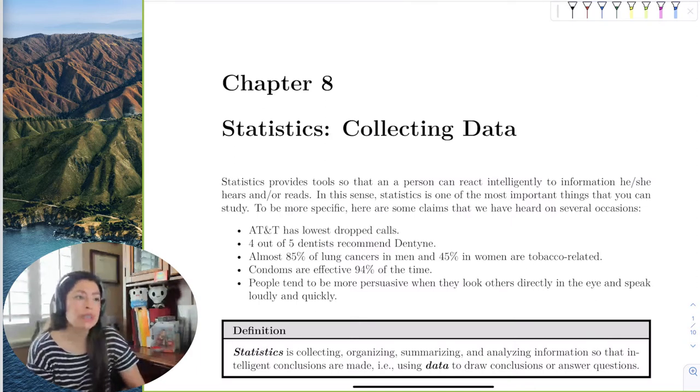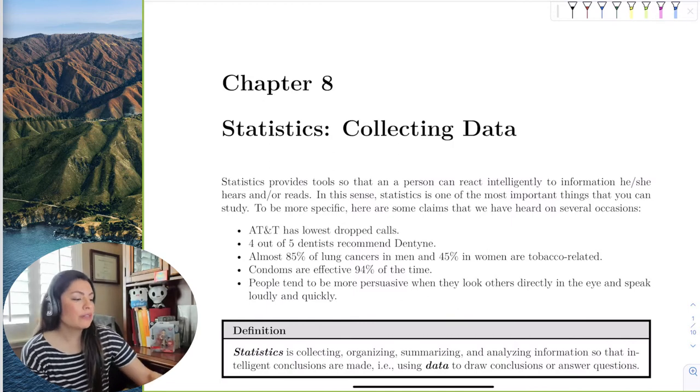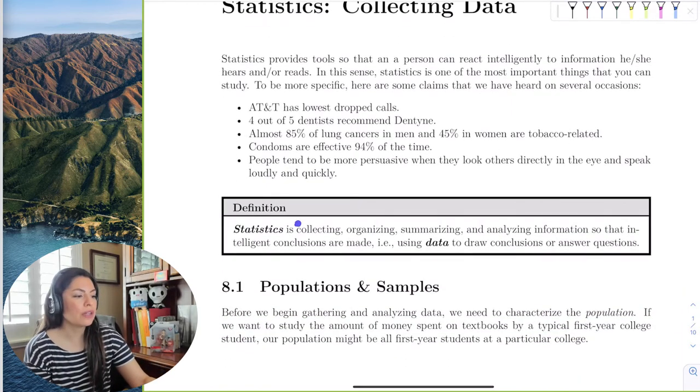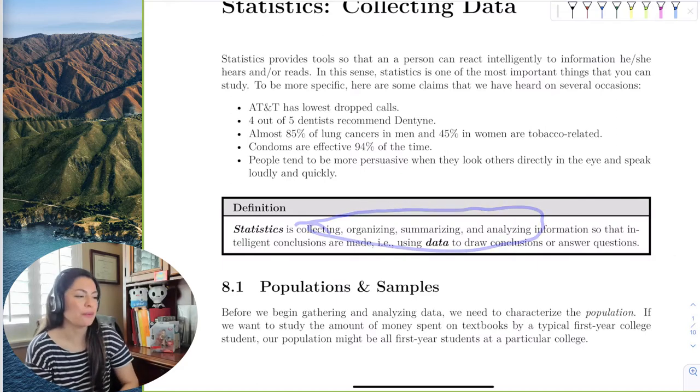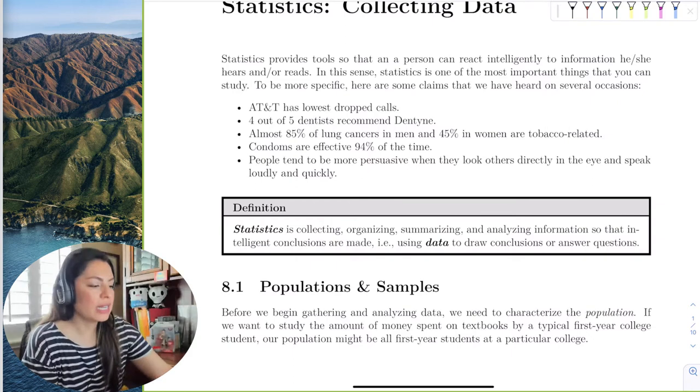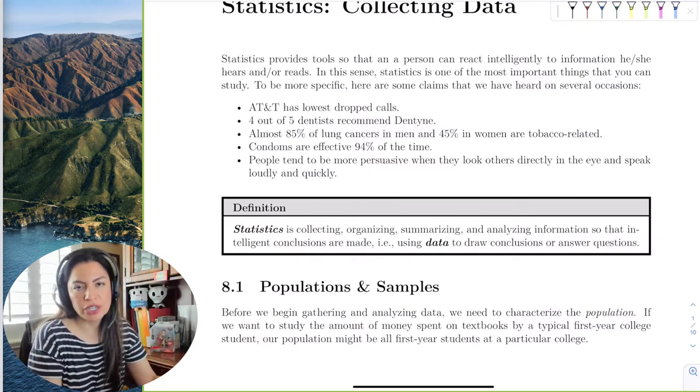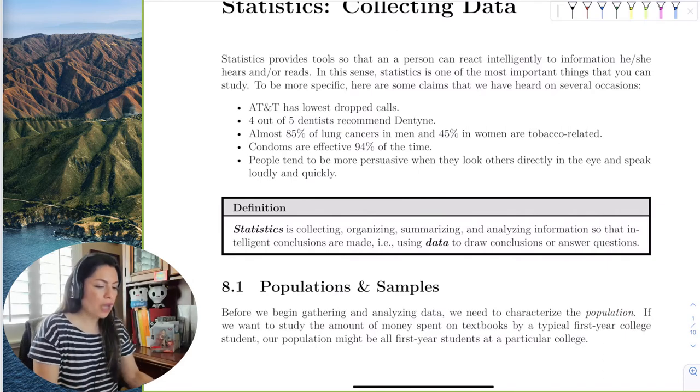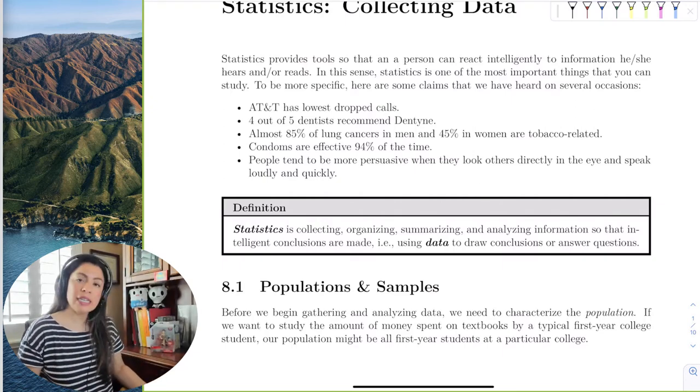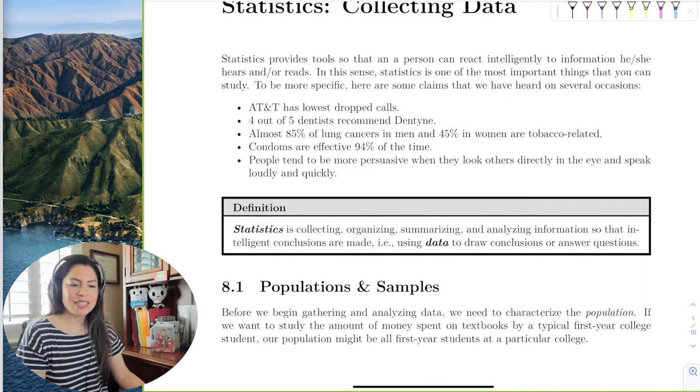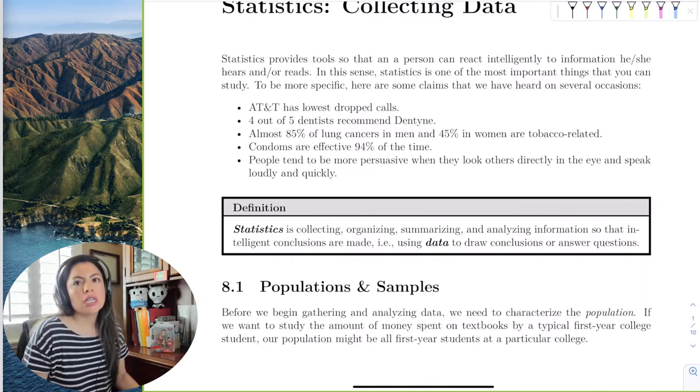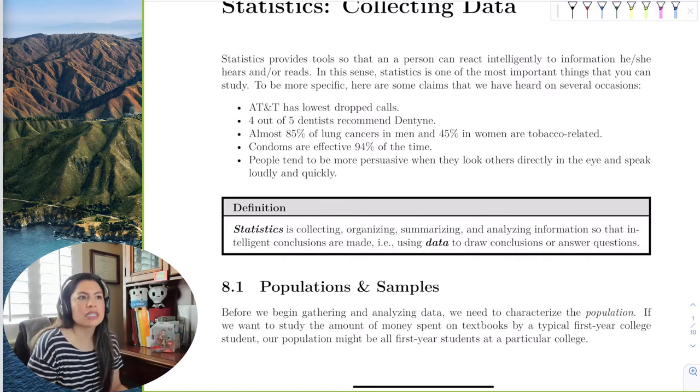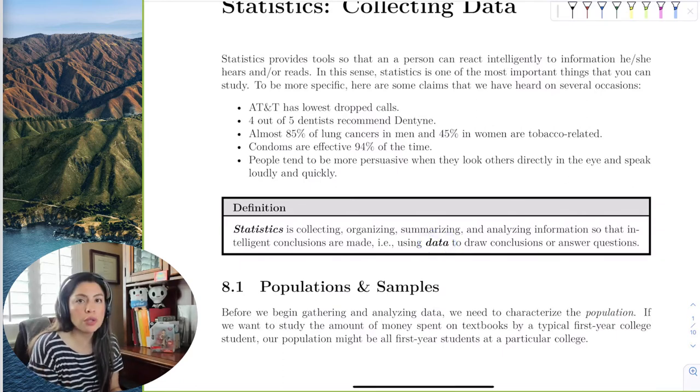If we get started, the first thing we should probably do is define statistics. If we define statistics, it's just the process of collecting, organizing, summarizing, and analyzing information. What we do with statistics is draw intelligent conclusions. We no longer are robots to everything. We're going to make intelligent decisions based on statistics. How do we do that? We've got to use data. Data is the actual pieces of information and observations we use to draw conclusions.